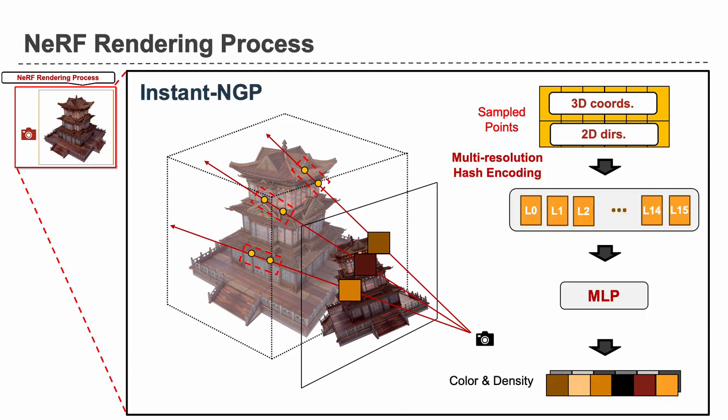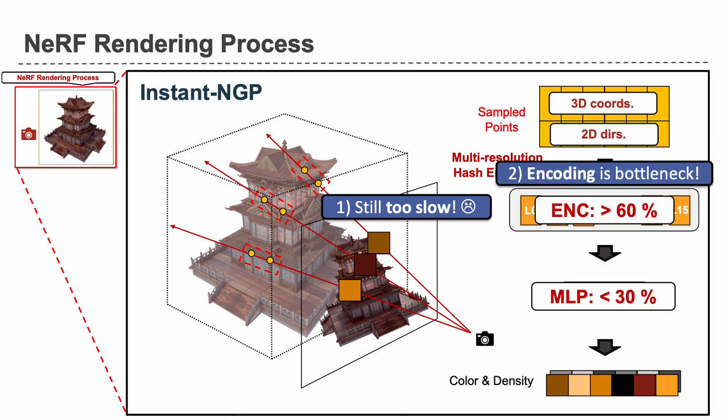Instant NGP employs multi-resolution hashing encoding and demonstrates state-of-the-art performance. However, it still suffers from slow rendering time. On a high-end GPU, it renders full HD images only at 2 to 10 frames per second. In detail, the coding stage is the main bottleneck, which takes more than 60% of the total rendering time.